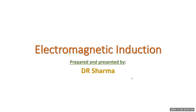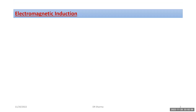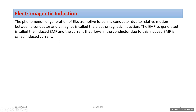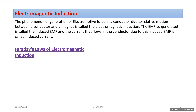Electromagnetic induction is the phenomenon of creating an EMF due to relative motion between a coil and a magnet. The EMF so induced is called induced EMF, and the current that flows in the circuit due to induced EMF is called the induced current. This phenomenon was first observed and studied by Faraday.